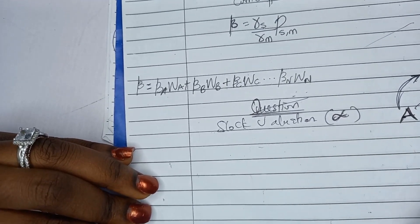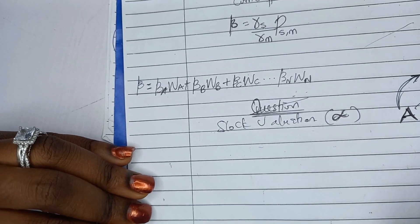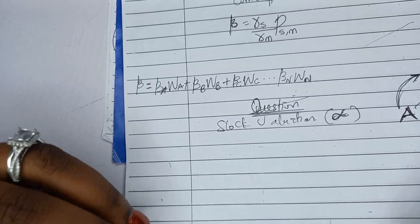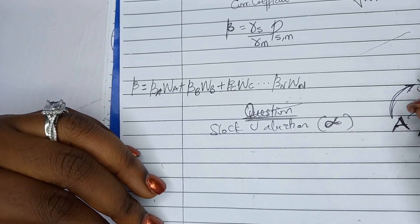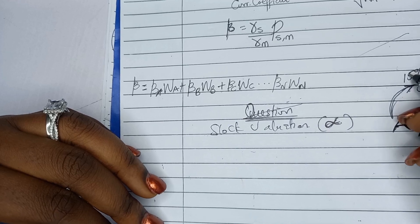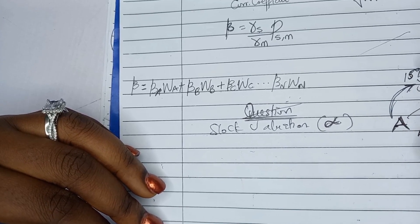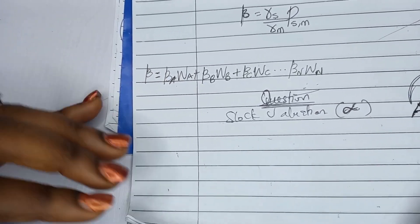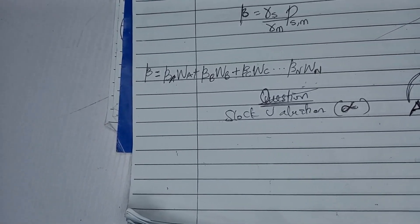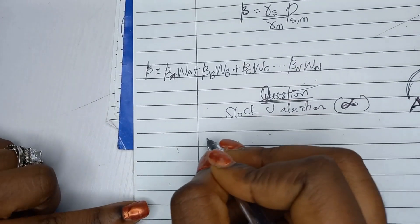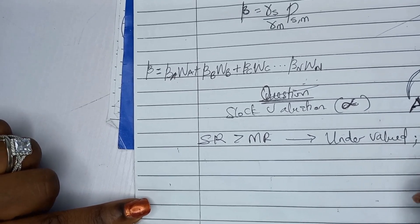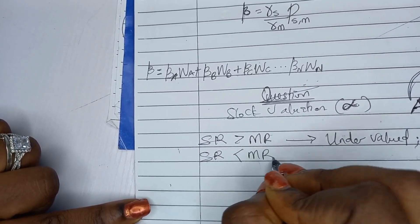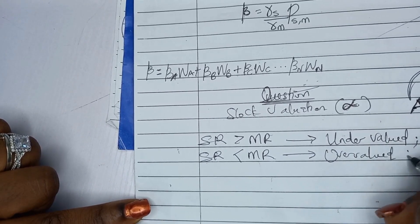Alpha is the difference between the stock return and the market return. The stock return is what the stock actually produced. For example, if the market predicted 15% but the stock returned only 10%, the market has overvalued the stock. Stock valuation tells us whether a security is overvalued or undervalued.